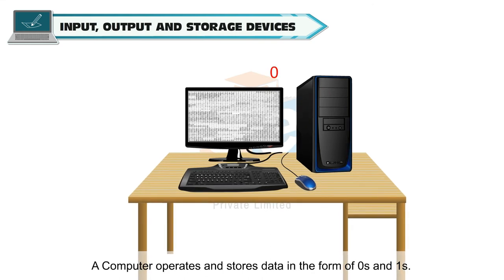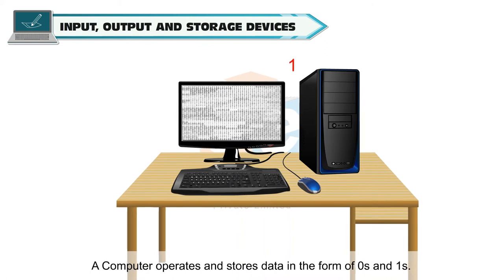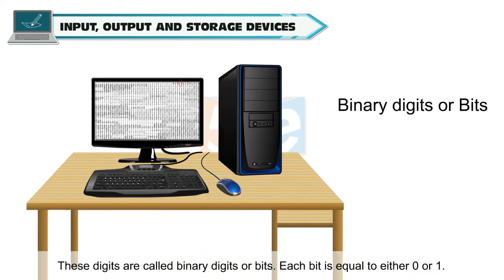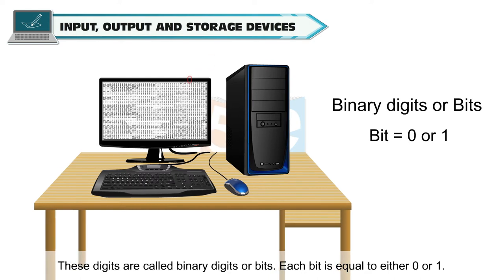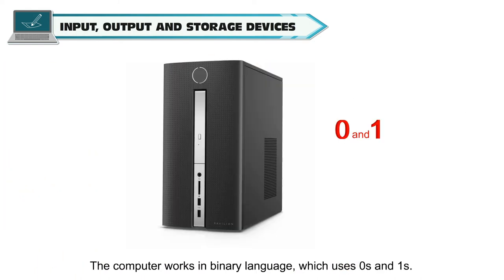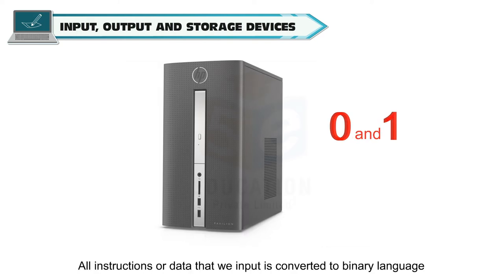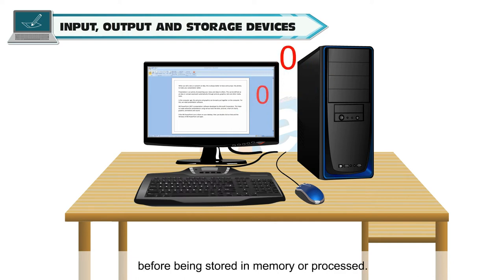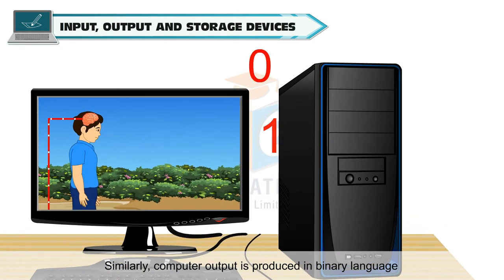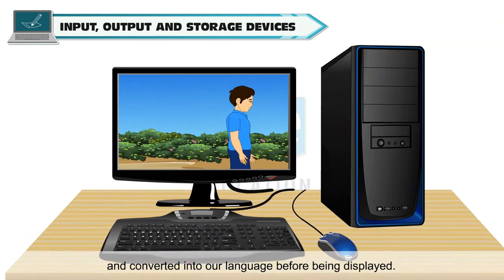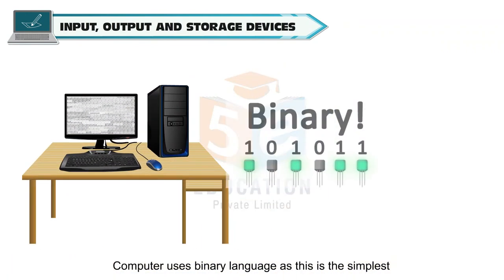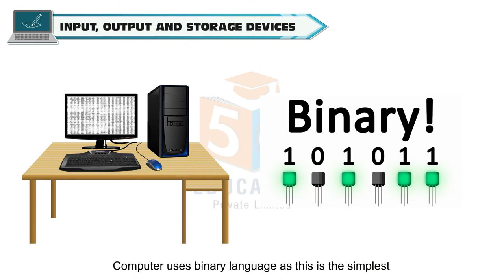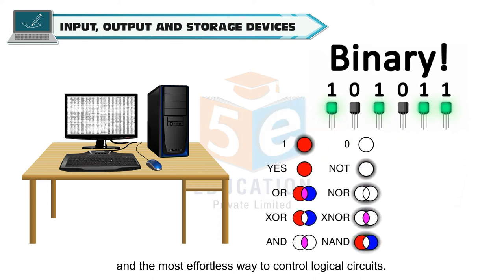A computer operates and stores data in the form of zeros and ones. These digits are called binary digits or bits. Each bit is equal to either zero or one. All instructions or data that we input is converted to binary language before being stored in memory or processed. Similarly, computer output is produced in binary language and converted into readable language before being displayed. Computer uses binary language as this is the simplest and the most effortless way to control logical circuits.